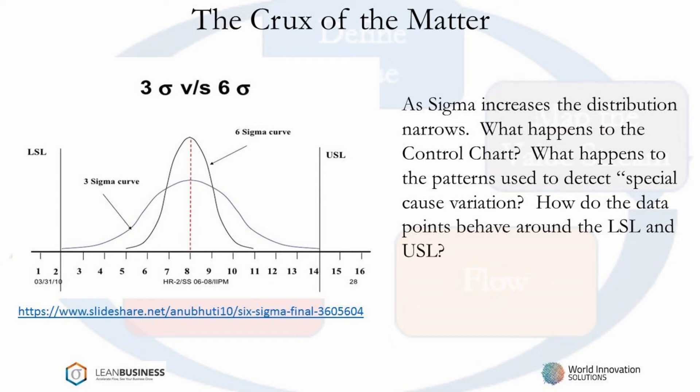At Six Sigma, the probability of a point exceeding the LSL or USL is negligible. A wide breadth of control chart research was done at plus or minus Three Sigma. Six Sigma processes cannot be effectively analyzed with this technology.